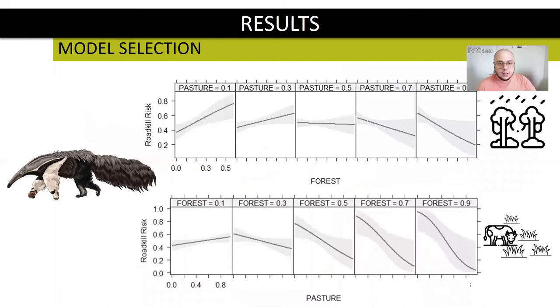In the first line of the graphics, we can see the relation between forest and roadkill risk, and in the second line, the opposite, where the forest cover is acting as a regulator of the roadkill risk. That probably occurs because of the dependence of the species to forest areas.